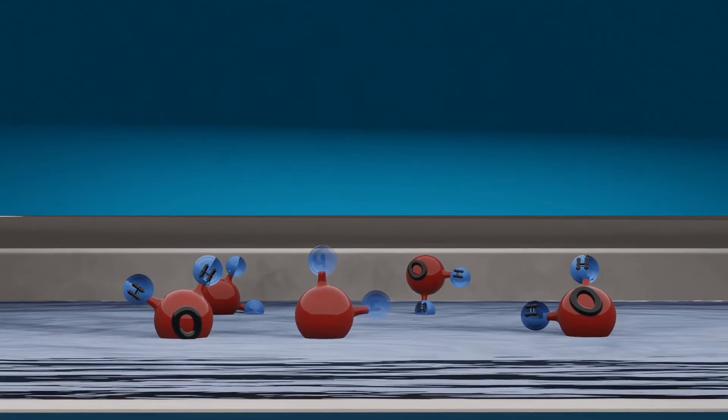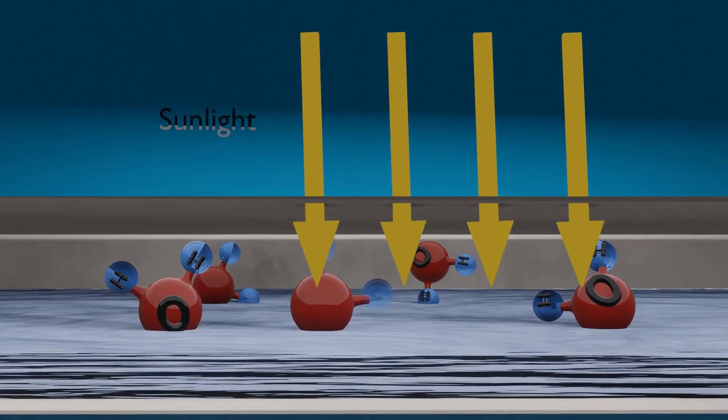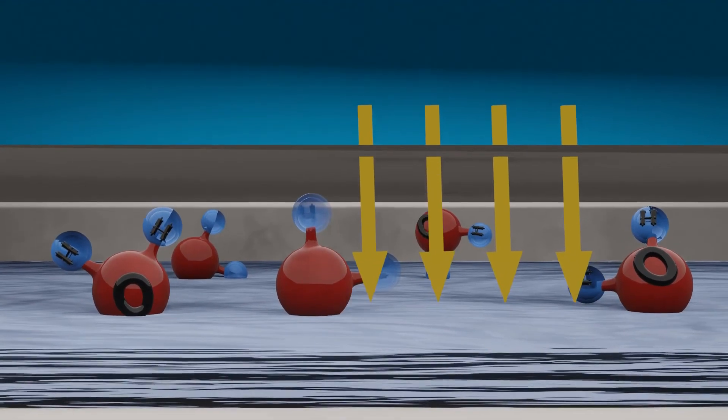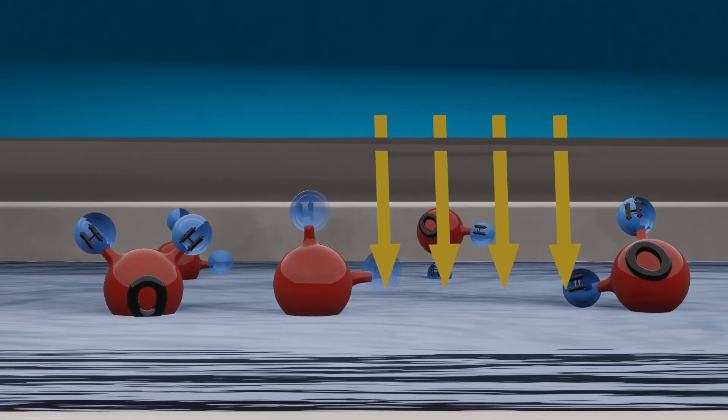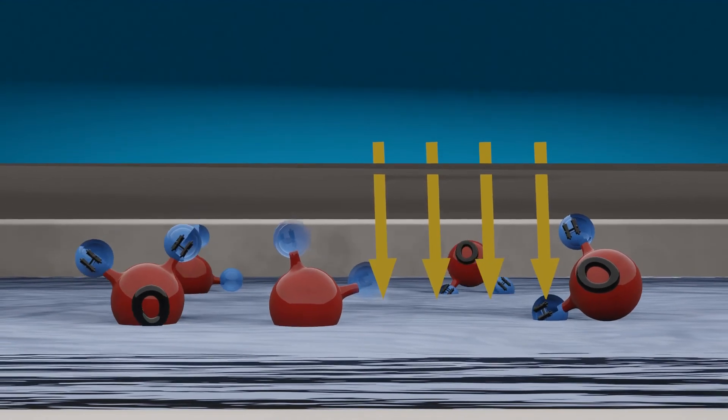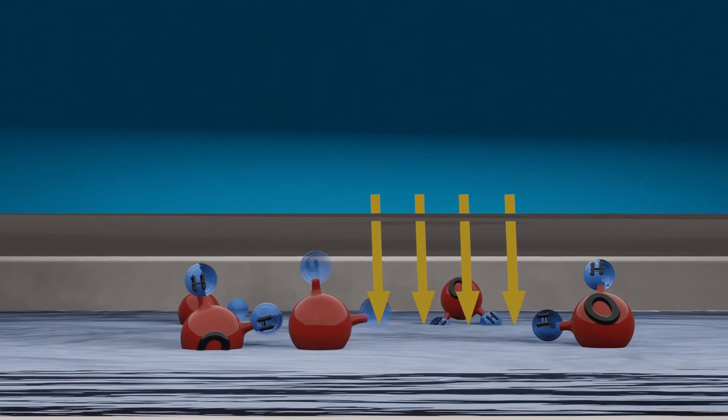When the sunlight falls on wet clothes, the water molecules absorb the energy of the sunlight and become unstable. The energized and unstable water molecules then move out of the clothes as water vapor.